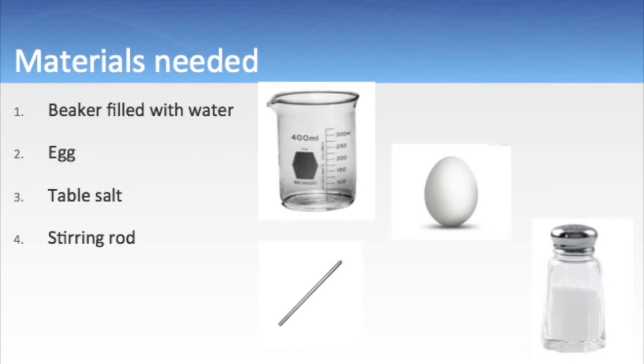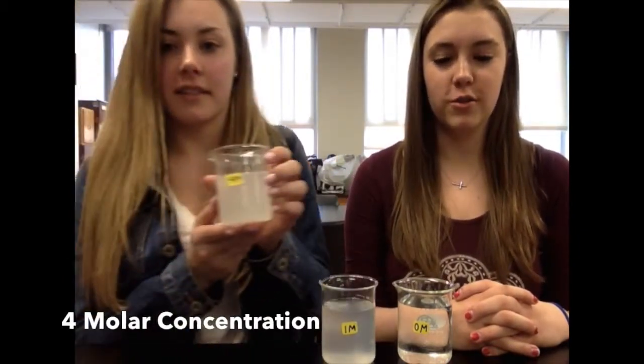For this experiment, we're going to use three beakers, three eggs, table salt, and a stirring rod. Here in our lab, we set up three different beakers each containing 200 milliliters of water. To change the density of the water, we are adding NaCl, or table salt, to our beakers. The first beaker has only water, so it has a zero molar salt concentration. The second beaker has a one molar salt concentration. The third beaker has a four molar salt concentration. We will now place an egg into each beaker to test what molarity will make the solution more dense than the egg, making it float.